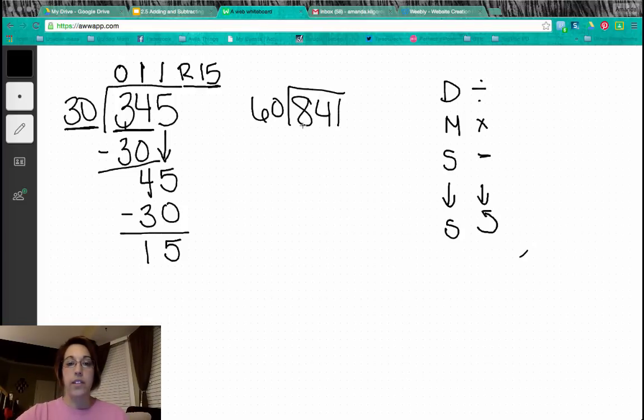So let's look at this second one. We know it's a two digit divisor, so we're going to start with a zero. We ask ourselves, how many times will 60 go into 84? Well, I know that one times 60 is 60. Two times 60 is 120, so that's going to be too much. So we're going to put a one here. Go ahead and subtract our 60.